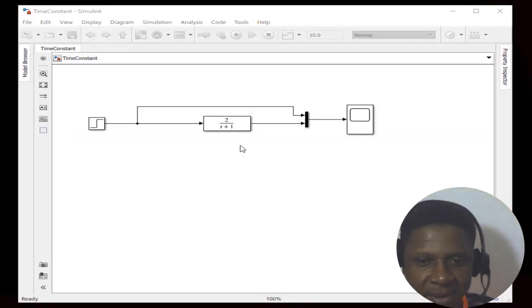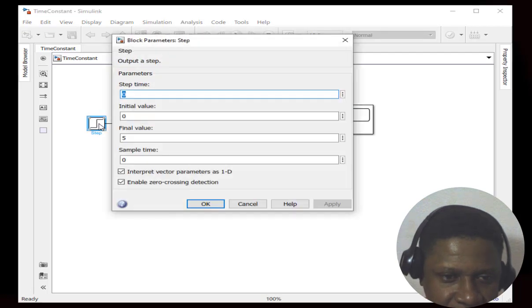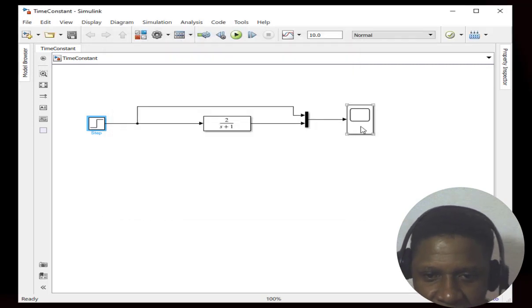Okay, I have already modeled our system here. As you can see, this is our transfer function. K equals 2 and tau equals 1. And our input, magnitude of our input equals 5, as we said before. So, we'll be expecting 5 times 2 to be our final value. Let's simulate and see our results.